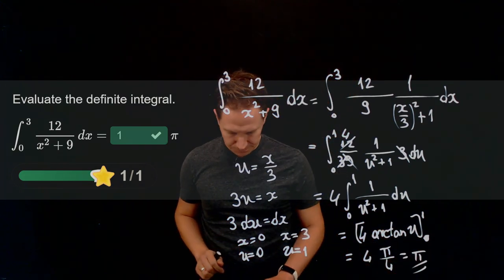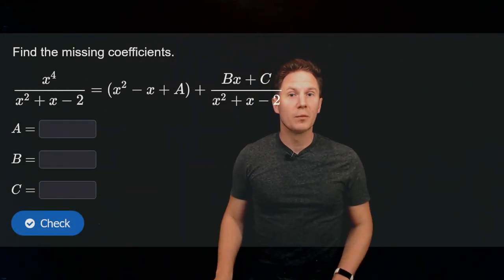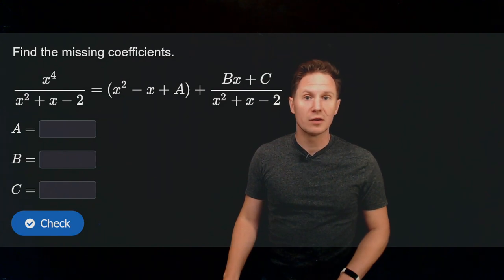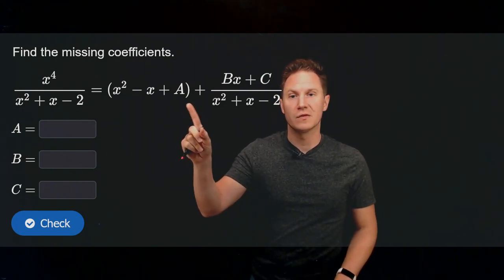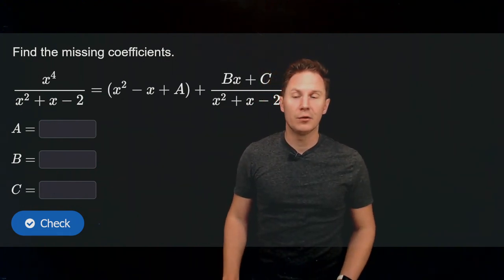Let's look at the next question. Find the missing coefficients. So here in this problem what you need to do is long division and find what the missing coefficients A, B and C are. Pause the video and input their values in the boxes.